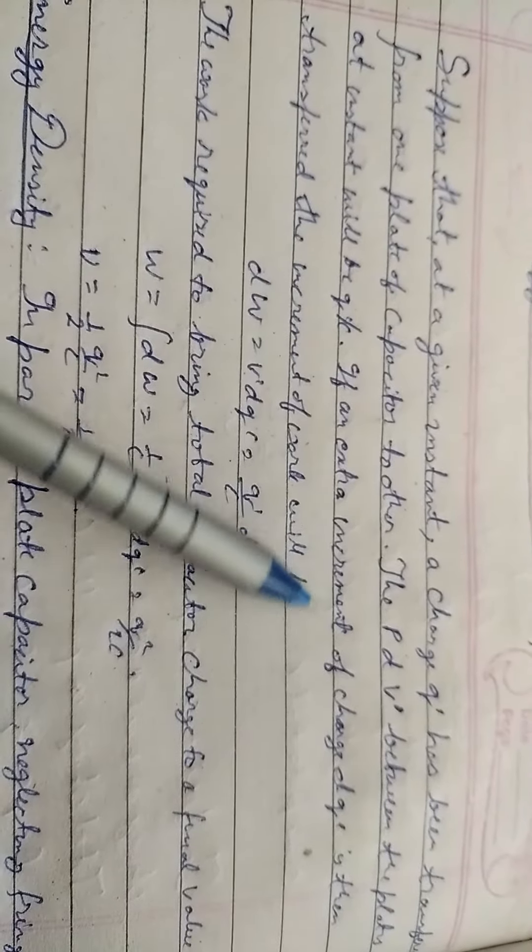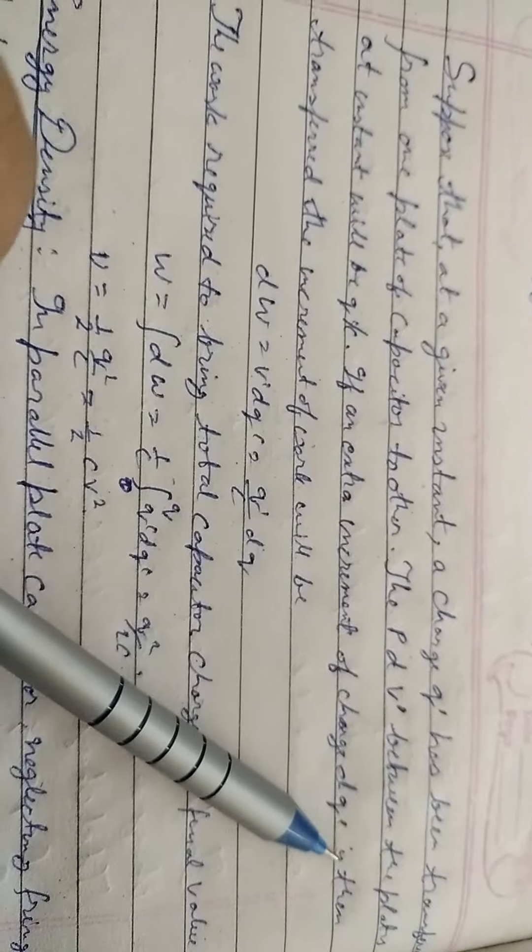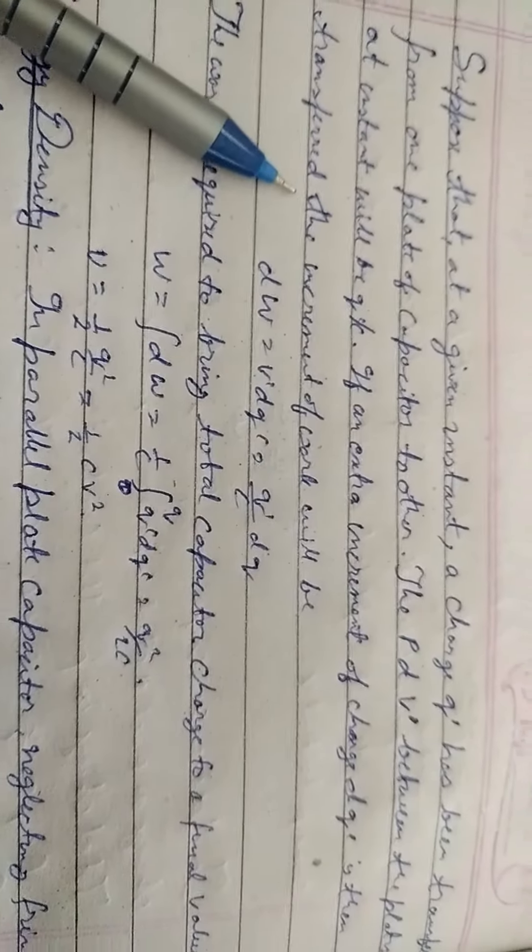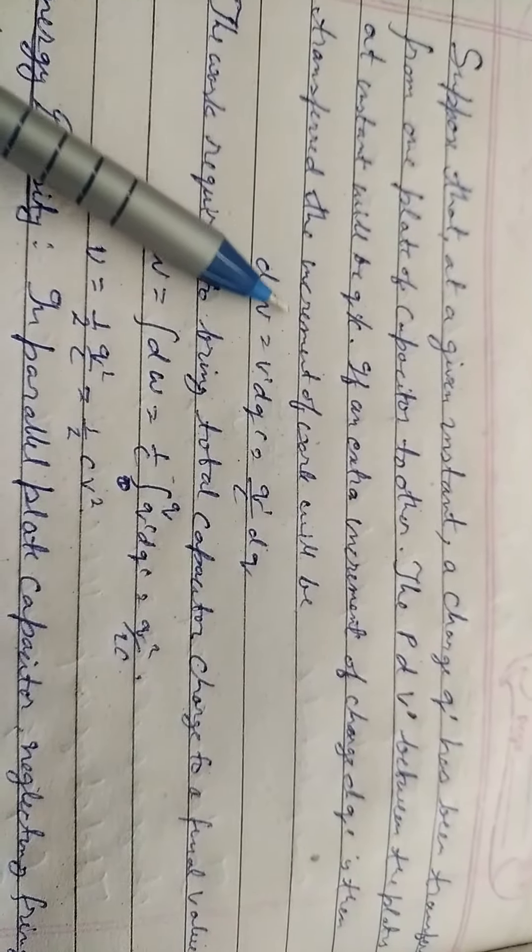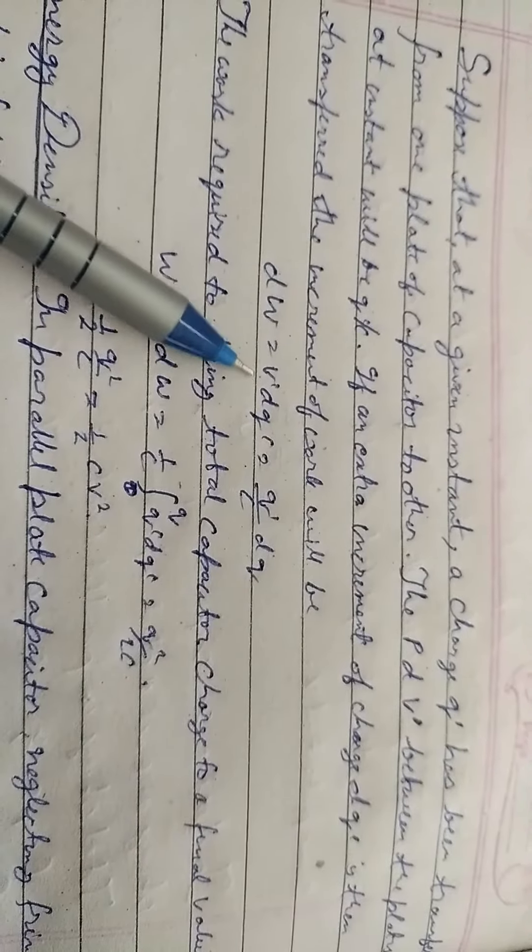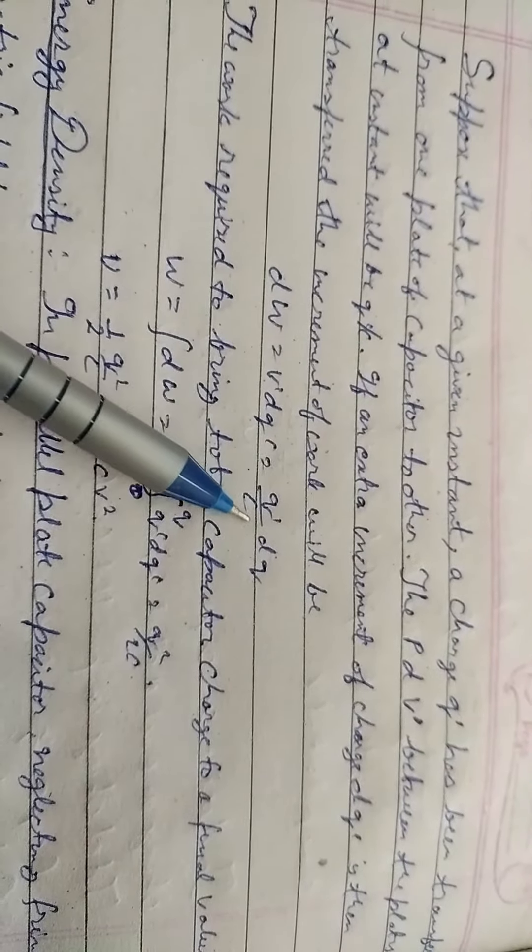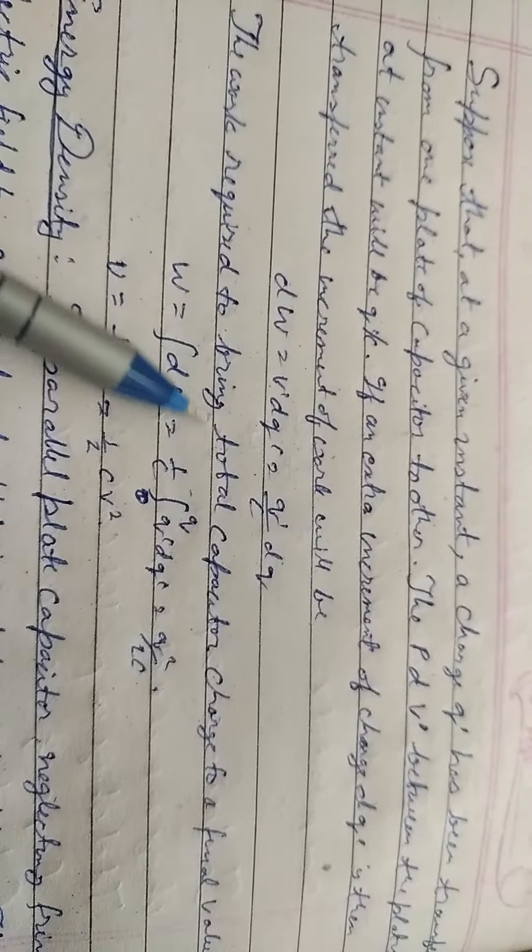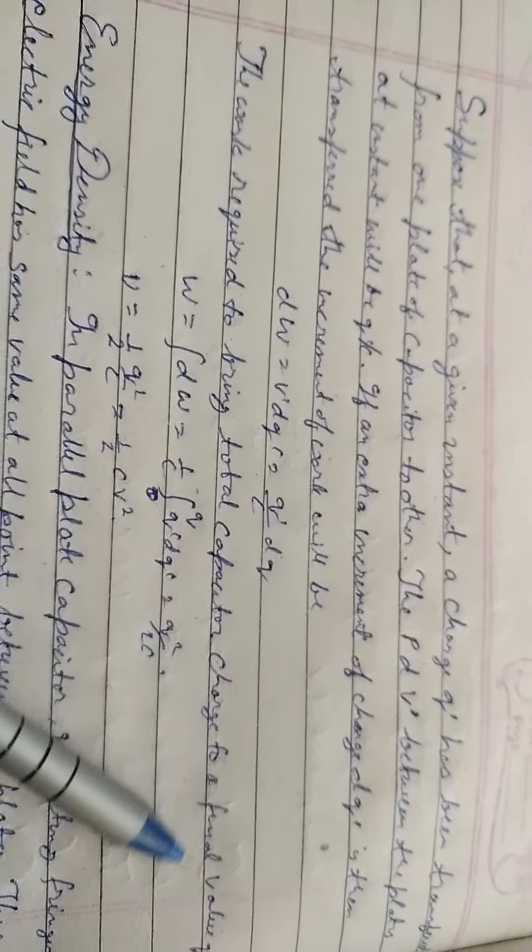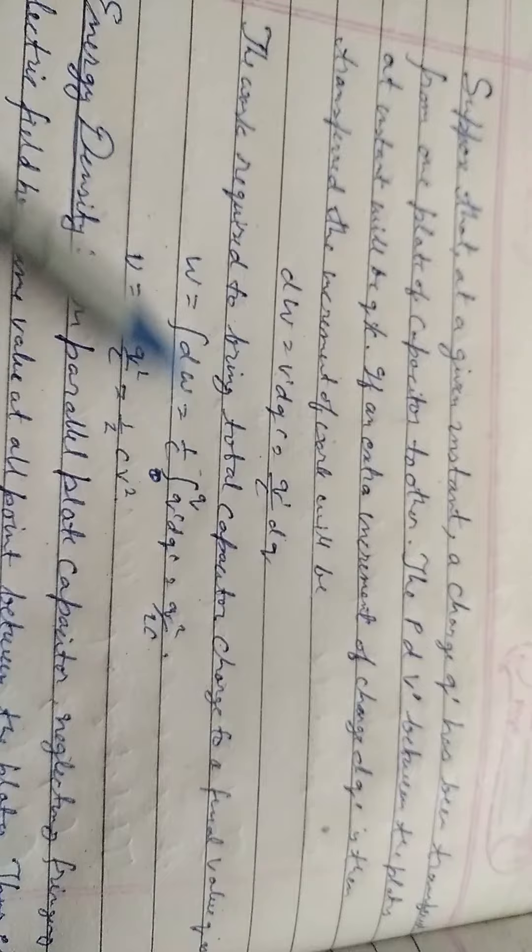If an extra increment of charge DQ' is then transferred, the increment of work will be dW equals V' DQ' equals Q' by C into DQ'. The work required to bring the total capacitor charge to a final value Q as W